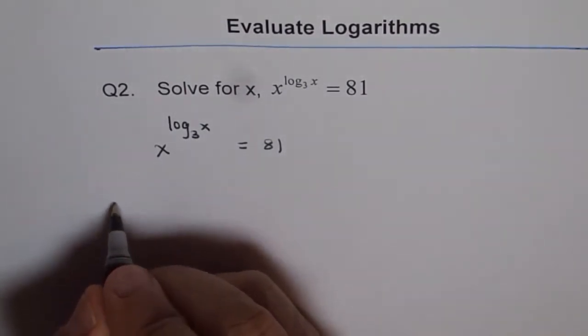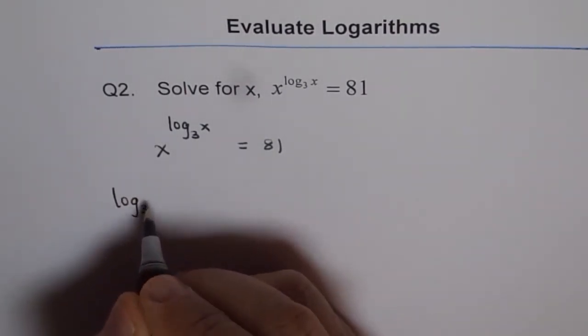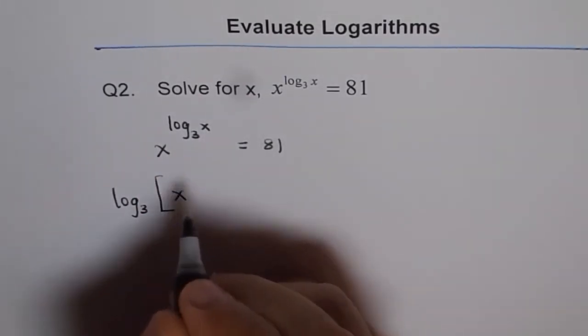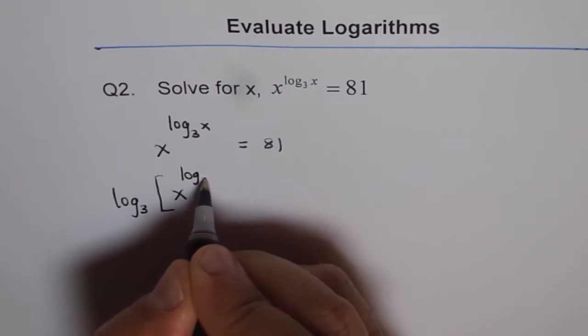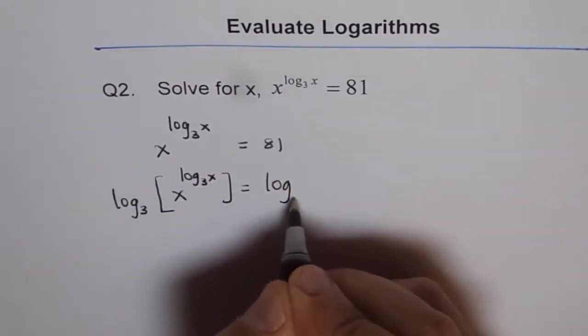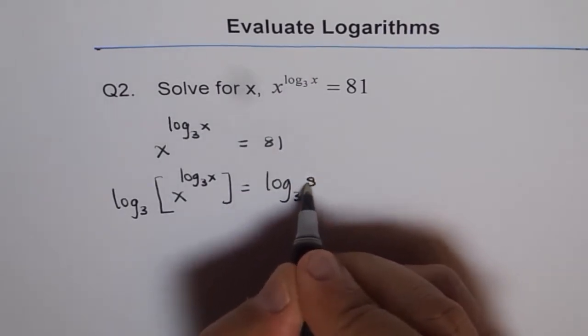And then what do we get? We get log to the base 3 of all this. So, this is x to the power of log base 3 of x, equals to log to the base 3 of 81.